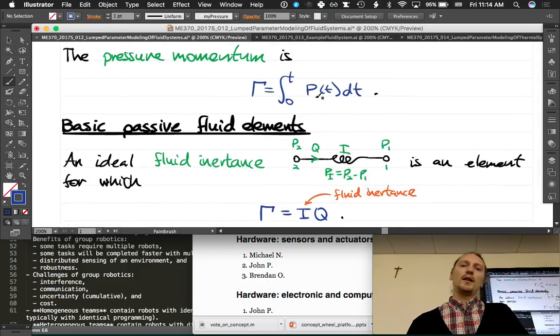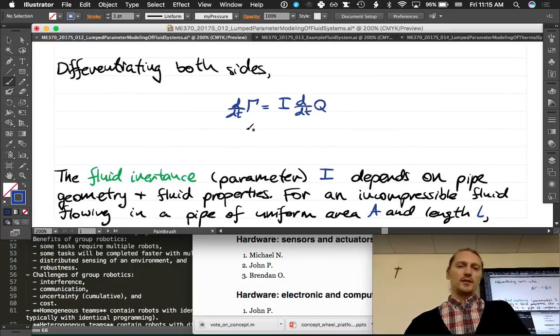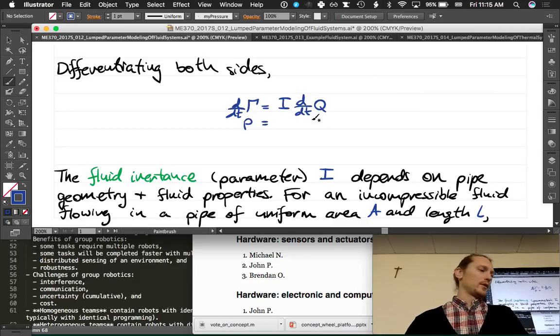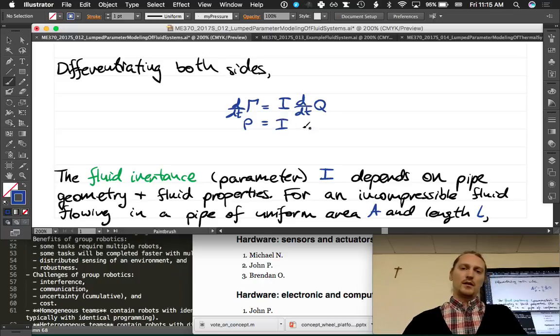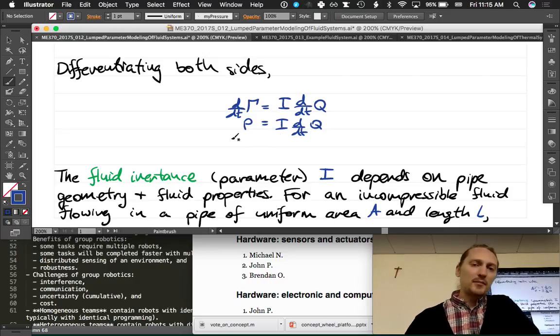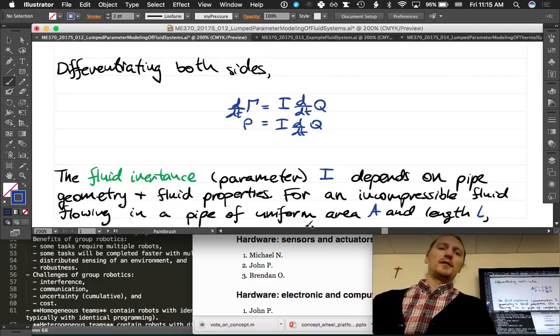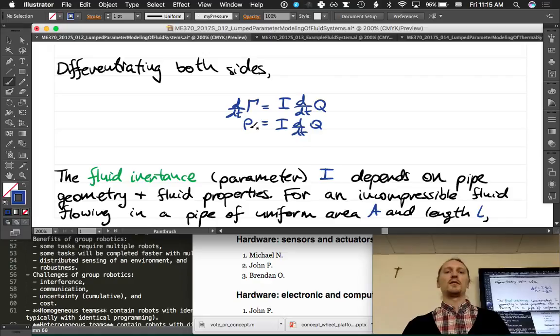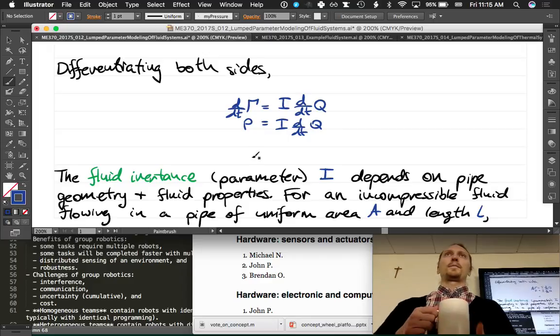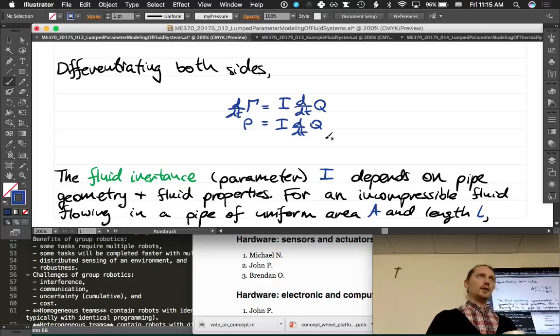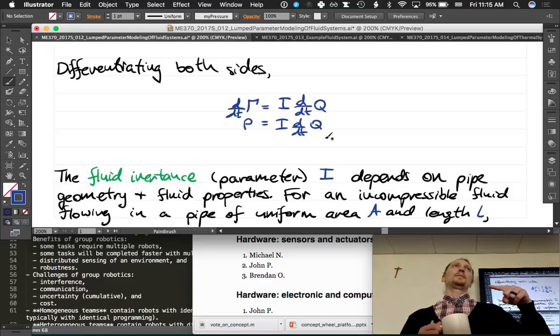So we take the time derivative with respect to t of gamma. What would that be? P. Yeah. So we get the pressure equal to i times d/dt q. And the pressure is going to be equal to, what kind of variable is p? It's a power flow variable, right? And what about q? Also a power flow variable. Good.